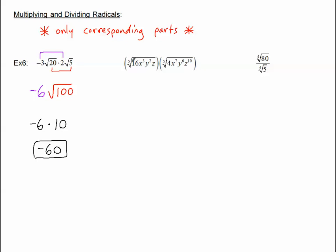Let's look at the second part. I have a fifth root of a bunch of stuff underneath, times another fifth root of a bunch of stuff underneath. Multiplying is great — I just get to multiply the stuff in the corresponding parts. Nothing's on the outside, so everything's on the inside. Basically I'm just combining these together to make one giant fifth root. 16 times 4 becomes 64. X cubed times X to the 7th — when multiplying the same bases, I add their exponents and get X to the 10th. Y squared times Y to the 6th becomes Y to the 8th. And Z times Z to the 10th becomes Z to the 11th.